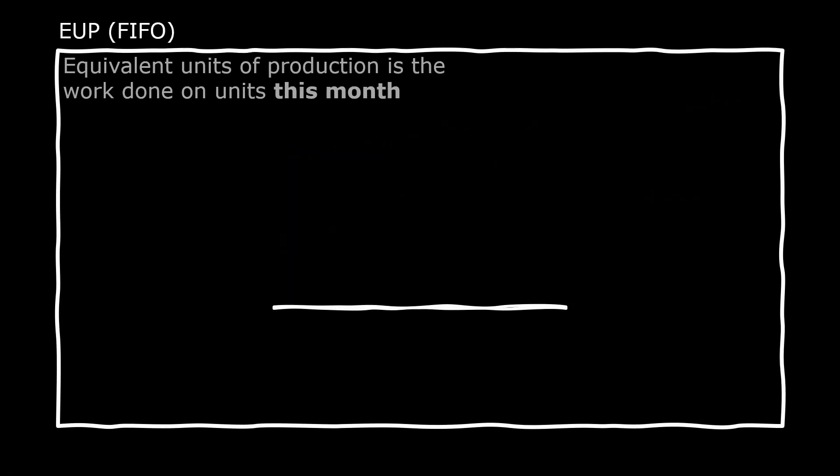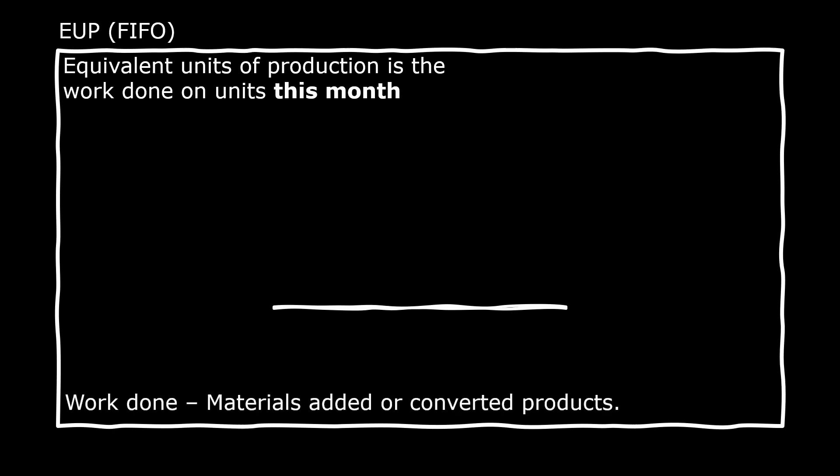Now let's talk about equivalent units of production, or EUP. EUP is basically the work done on units this month — we don't care about work done last month. Work done can refer to materials added (direct materials) or conversion of products (conversion costs). For this lecture, we'll use conversion costs, which is the combination of direct labor and overhead. Since overhead is usually based on direct labor, we can combine them for simplicity.